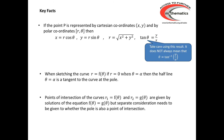To find the intersection of a curve r₁ = f(θ) and r₂ = g(θ), we can find the values of θ by solving f(θ) = g(θ). But we also need to consider whether both curves pass through the pole, because the pole will not necessarily be found by just solving f(θ) = g(θ).